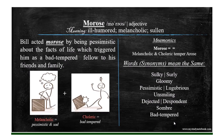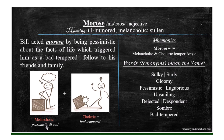Morose means ill-humored, melancholic or sullen. It also means sulky, surly, gloomy, pessimistic, lugubrious, despondent, somber or bad-tempered. Morose — melancholic and choleric temper. Bill acted morose by being pessimistic and sad about the facts of life, which made him a bad-tempered fellow to his friends and family.